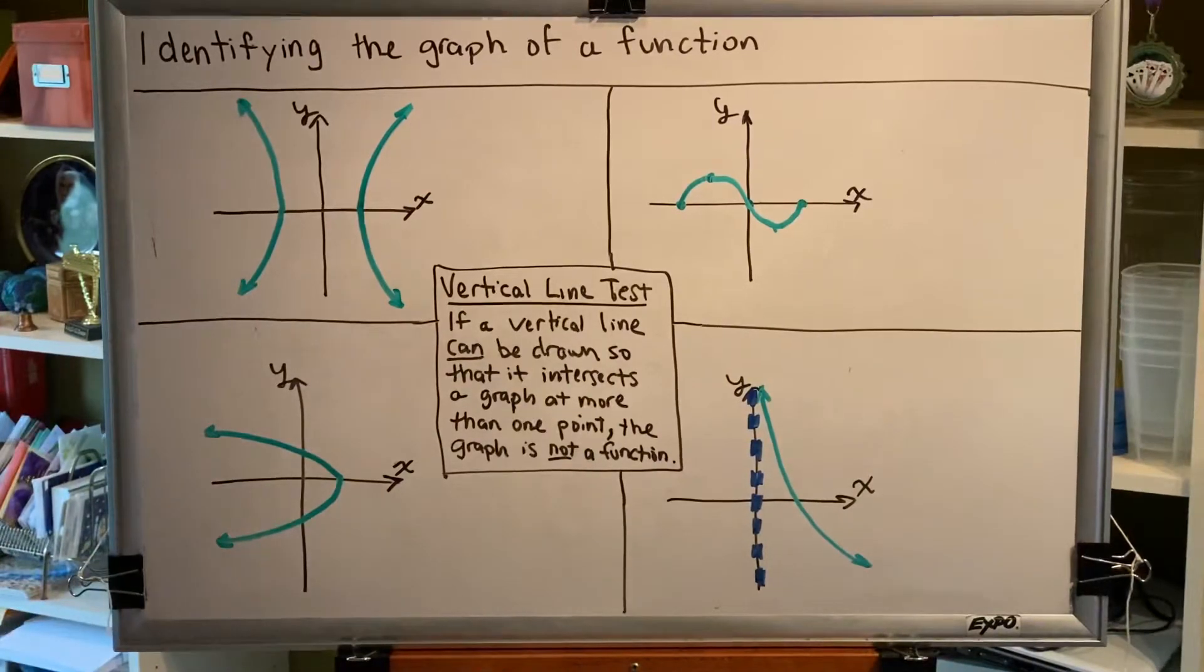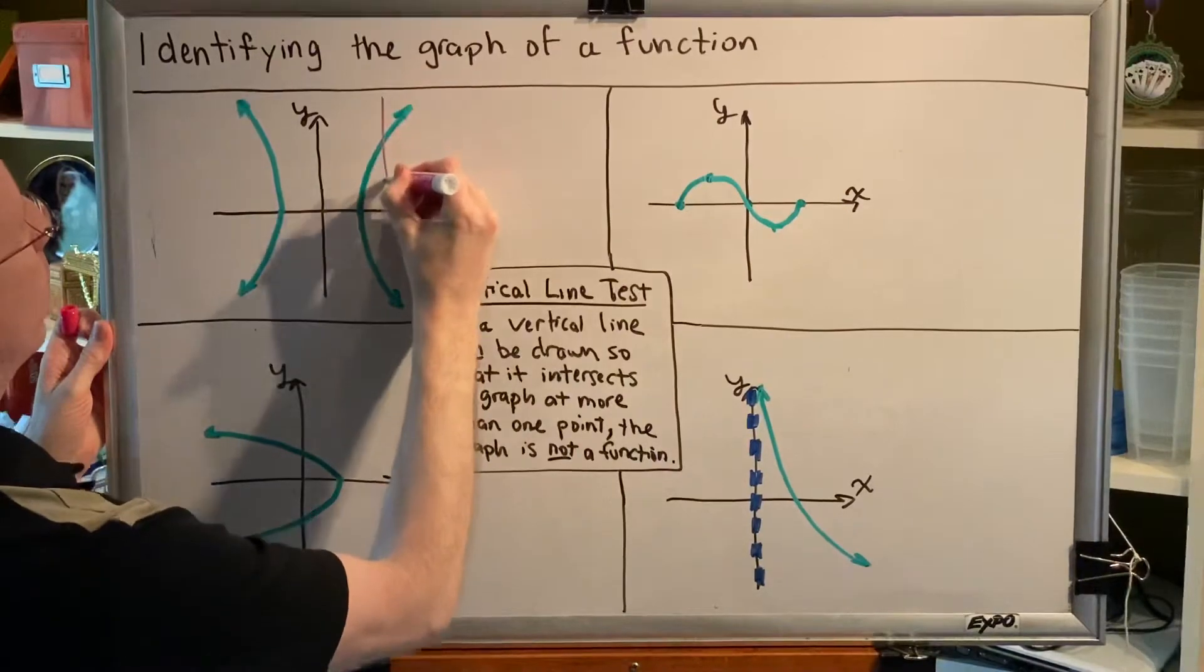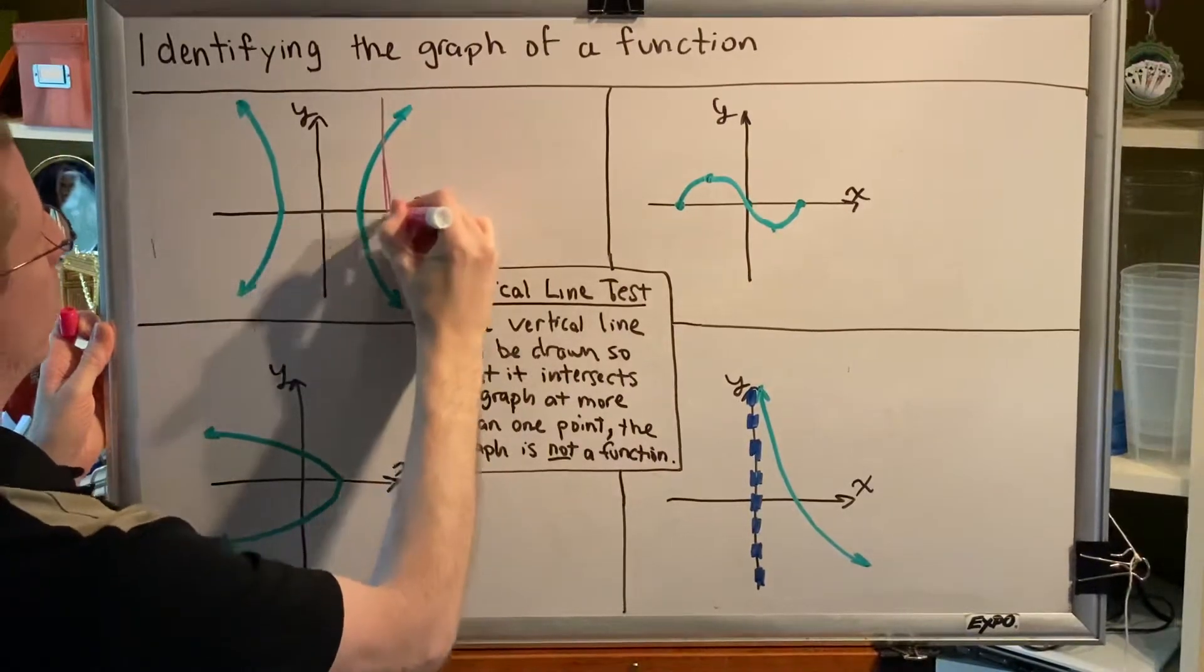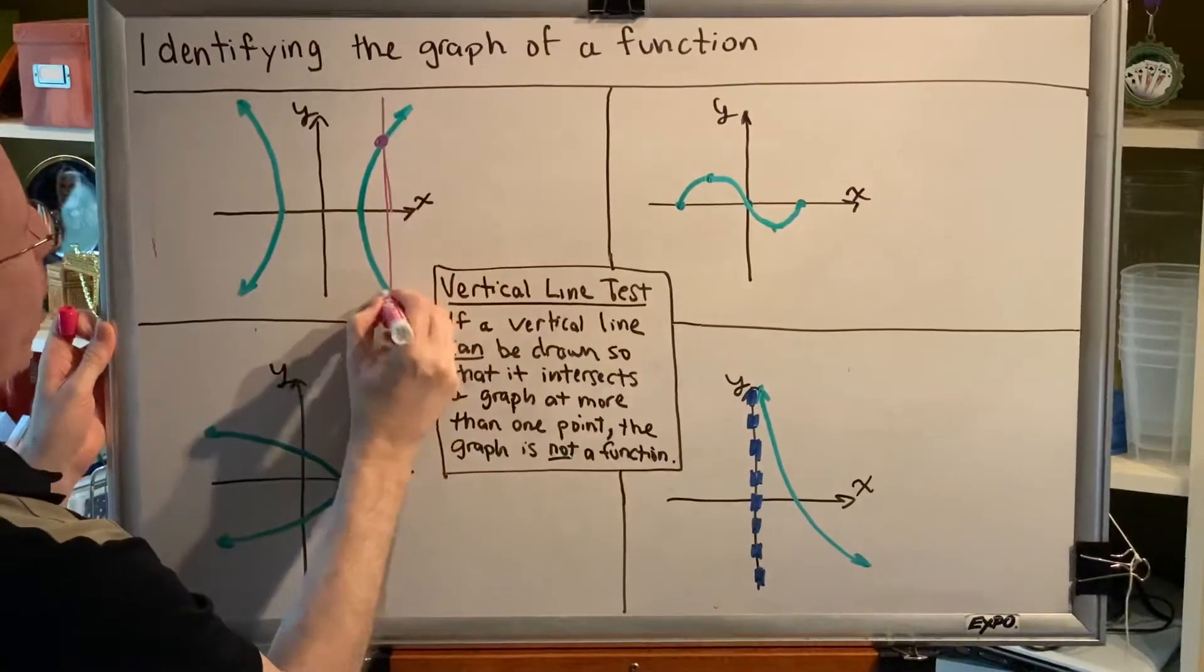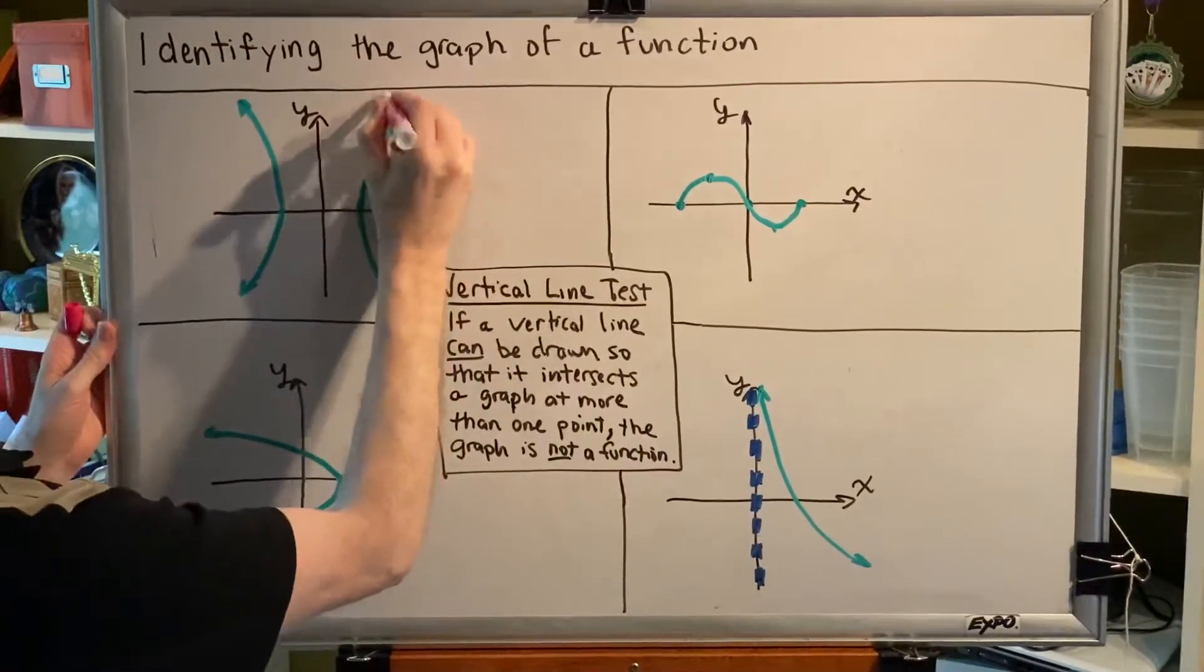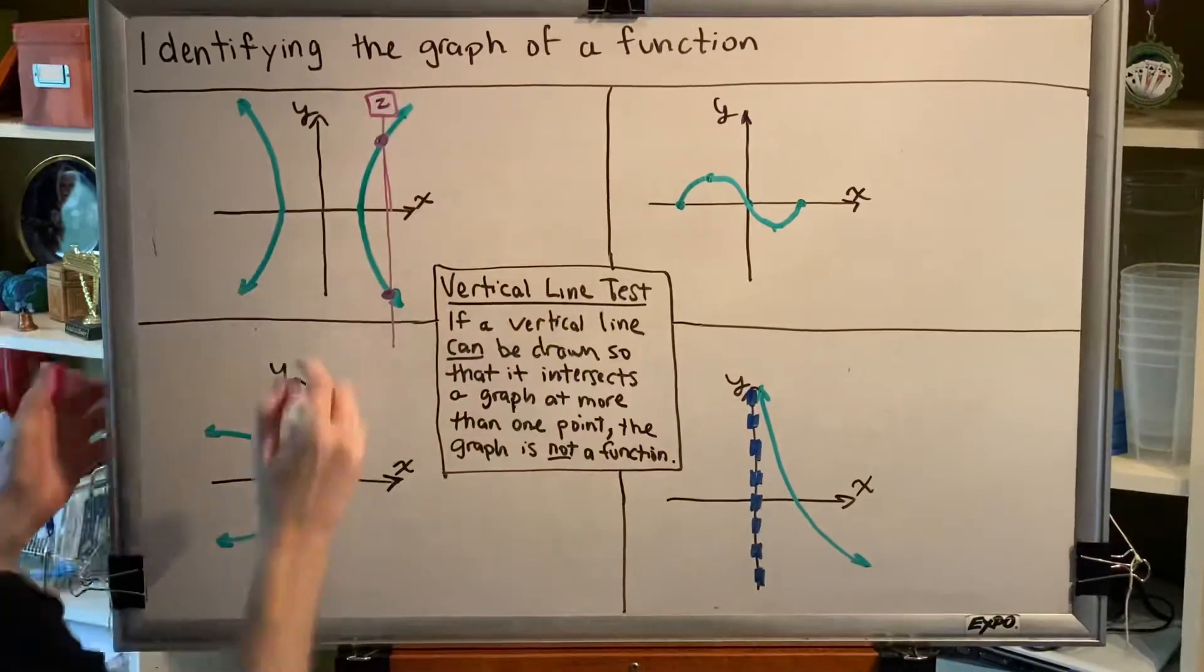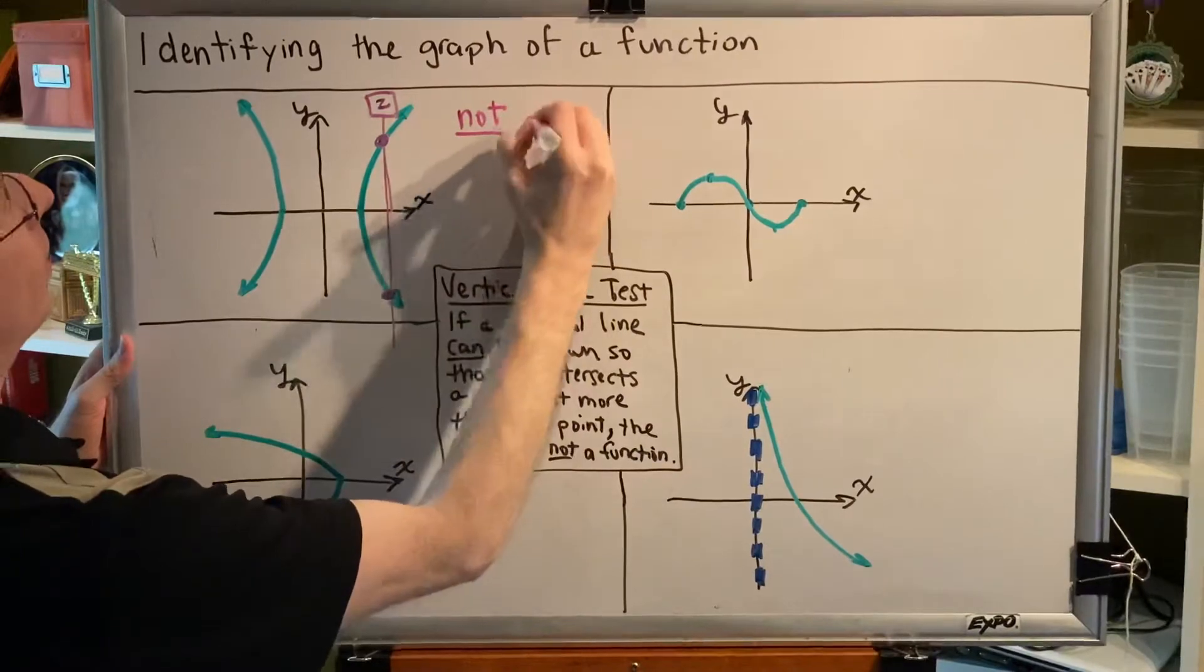Is that possible? The answer is yes. Watch. Here is a vertical line, and it is intersecting at more than one, in this case two points. Because two is more than one, this relation is not a function.